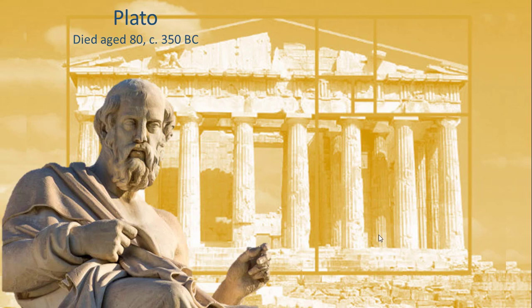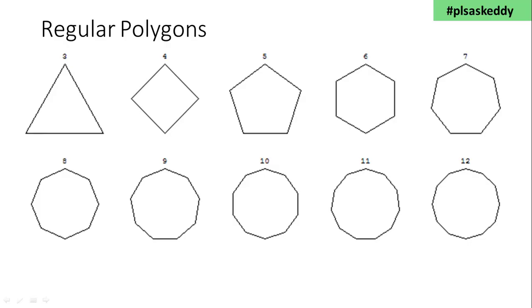Before we do this, however, we need to look at some two-dimensional shapes. These are regular polygons. Poly means many, gon means angled. These are many-angled figures. Regular, as in each shape, the sides are all equal, and the angles are all equal.